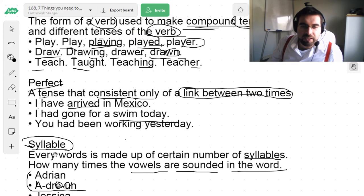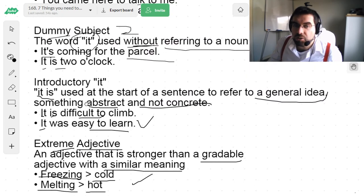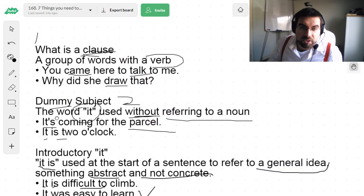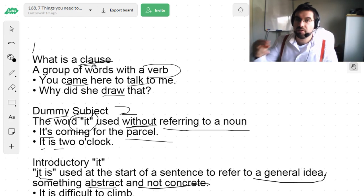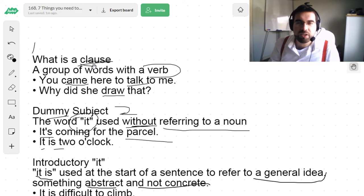So, that's it. Syllable. Perfect. Participle. Extreme adjective. Introductory it. Dummy subject. Clause. Cool. Seven things. Press the subscribe button. Keep watching. Always more videos. Bye for now.